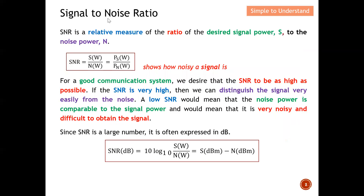Let's define signal-to-noise ratio. SNR is simply a relative measure of the ratio of the desired signal power S to the noise power N. The equation governing SNR is: SNR = S / N (in power). This ratio indicates signal strength versus noise, and tells us how noisy a signal is.